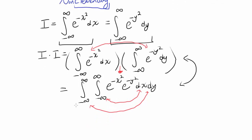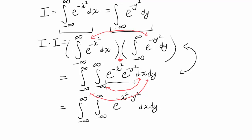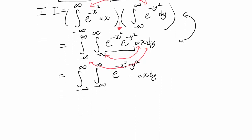Let's continue the simplification. You have the double integral from negative infinity to infinity of e to the negative x squared minus y squared dx dy. Because e to the something times e to the something else equals e to the sum — so negative x squared plus negative y squared — and you can factor out the negative to get e to the negative open-paren x squared plus y squared close-paren.